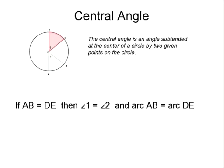Let me look at some terminology here. The central angle is an angle that's subtended at the center of a circle by two given points on the circle. Basically, we have a line that goes from the edge of the circle to the center, and then back to the edge of the circle, and the angle in the center is called the central angle — the angle that's cut out there.